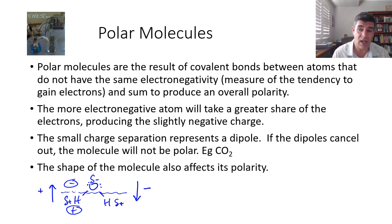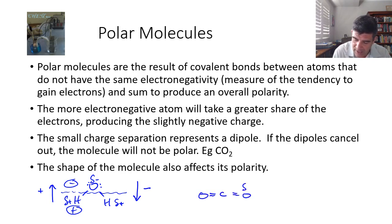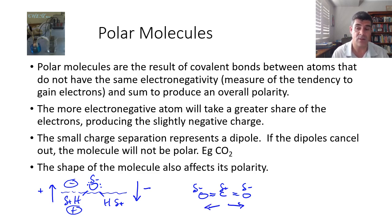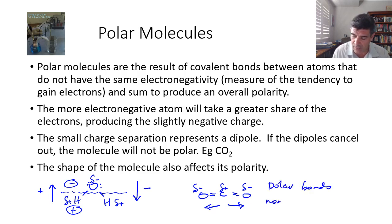Sometimes the charge separations will cancel one another out. In the case of carbon dioxide, there is a negative around the oxygens and a positive on the carbon. But a point positive charge would be moving in opposite directions on each side, and these two cancel one another out. So while we have polar bonds, we have a non-polar molecule.